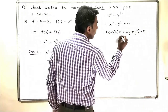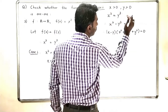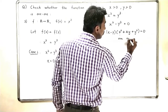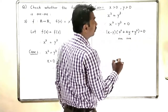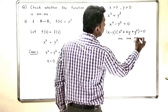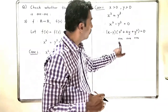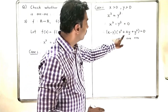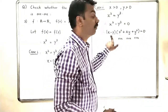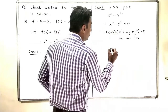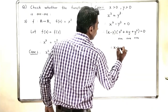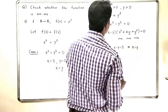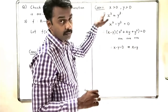Since x and y are positive, x², xy, and y² are all positive, so x² + xy + y² is a positive quantity. Since this positive quantity times (x - y) equals 0, we must have x - y = 0, and therefore x = y. So in Case 2, where both x and y are positive, x = y.